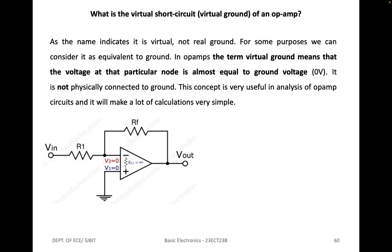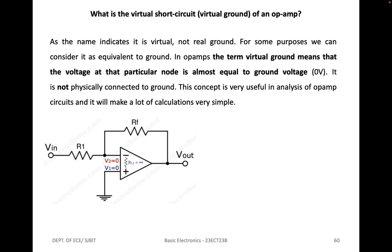In order to understand what virtual short circuit or virtual ground of an op-amp is: as the name indicates, it is virtual, not real ground. For some purposes we can consider it as equivalent to ground. In op-amps, the term virtual ground means that the voltage at that particular node is almost equal to ground voltage, that is 0 volts. It's not physically connected to ground. This concept is very useful in analysis of op-amp circuits and makes many calculations very simple.